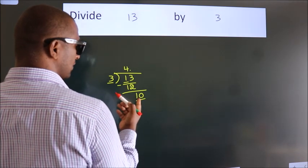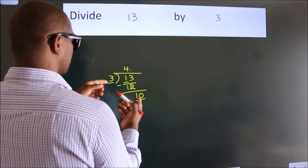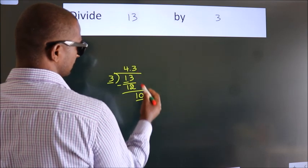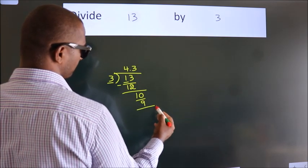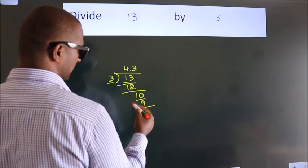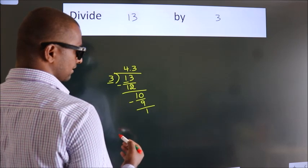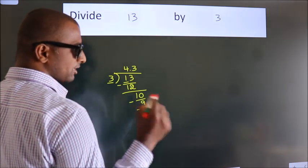A number close to 10 in the 3 table is 3 threes, 9. Now we subtract. We get 1. Now you observe.